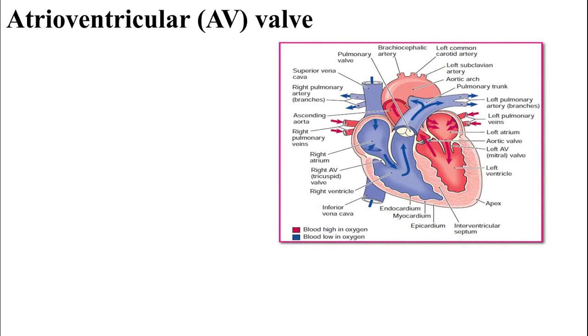Atrioventricular valves. A valve is a one-way door — it allows blood to flow in one direction. The AV valve is the valve between the atrium and the ventricle. We have two atrioventricular valves: the right AV valve and the left AV valve. The right AV valve is also known as the tricuspid valve, and the left AV valve is also known as the mitral valve or bicuspid valve.